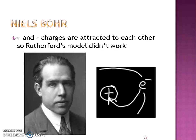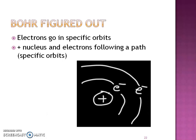Then Niels Bohr came up with the fact that these positive and negative charges are attracted to each other, so Rutherford's model didn't really work. Bohr said these electrons have to be on some kind of specific orbit. We're not going to call them orbits anymore — we'll call them energy levels. The reason is electrons have a lot of energy, and which energy level they're on tells us how much energy they actually have. So these electrons are going on specific paths around that nucleus, attracted to it but not running into each other.